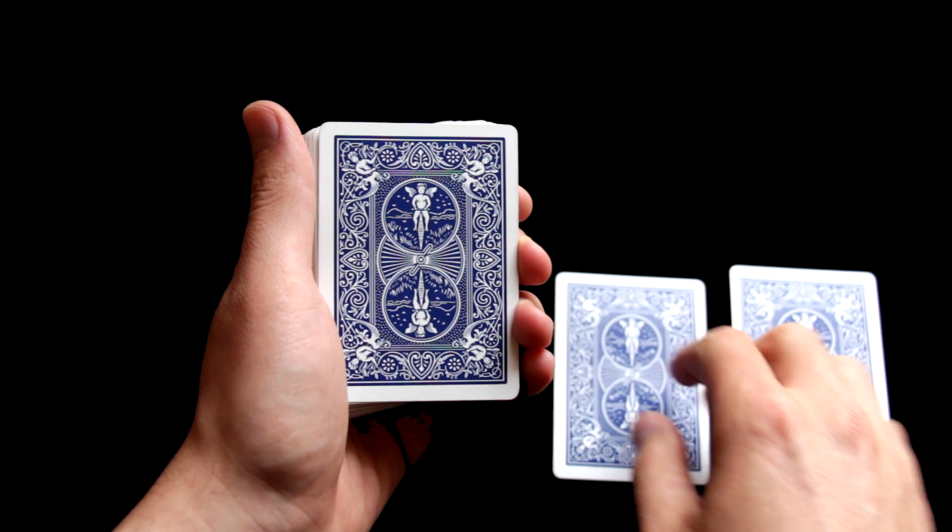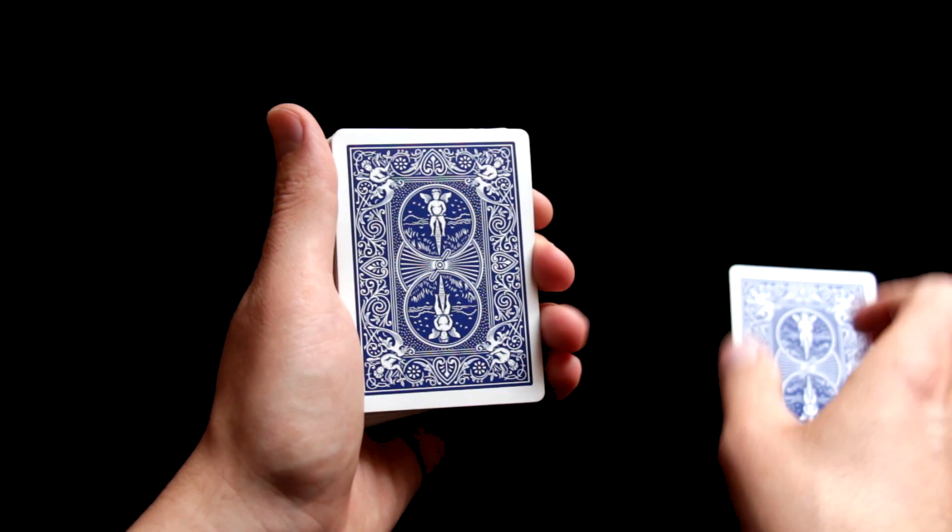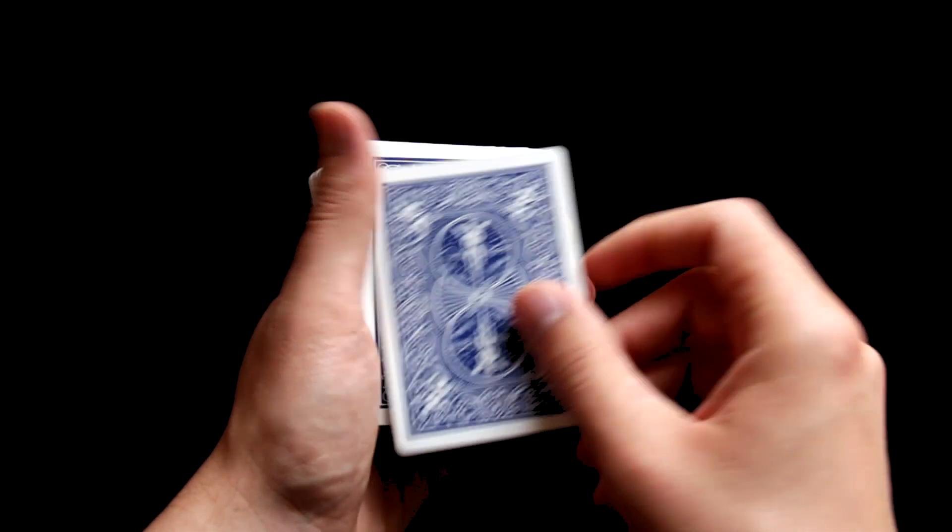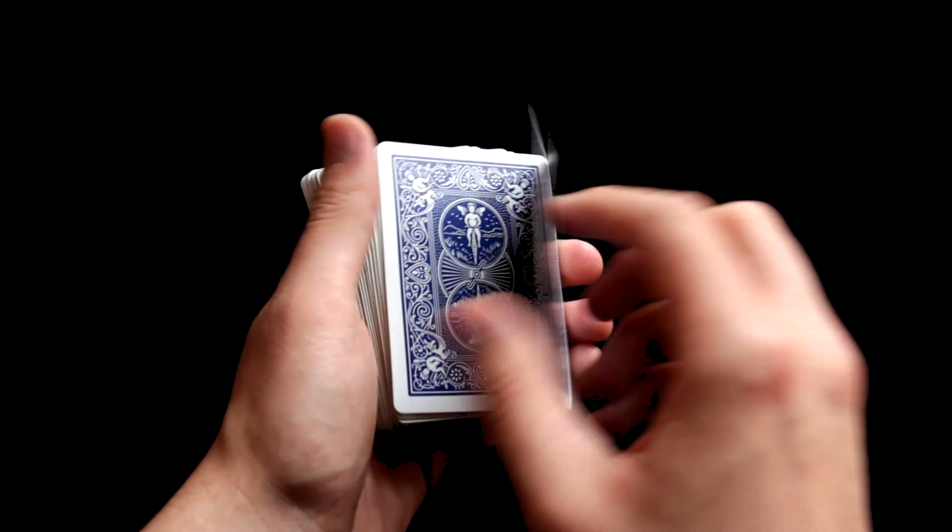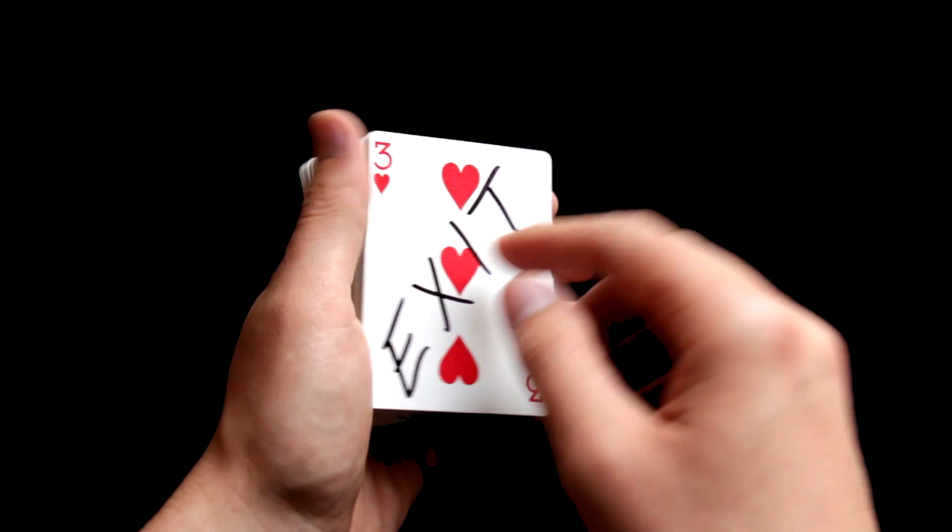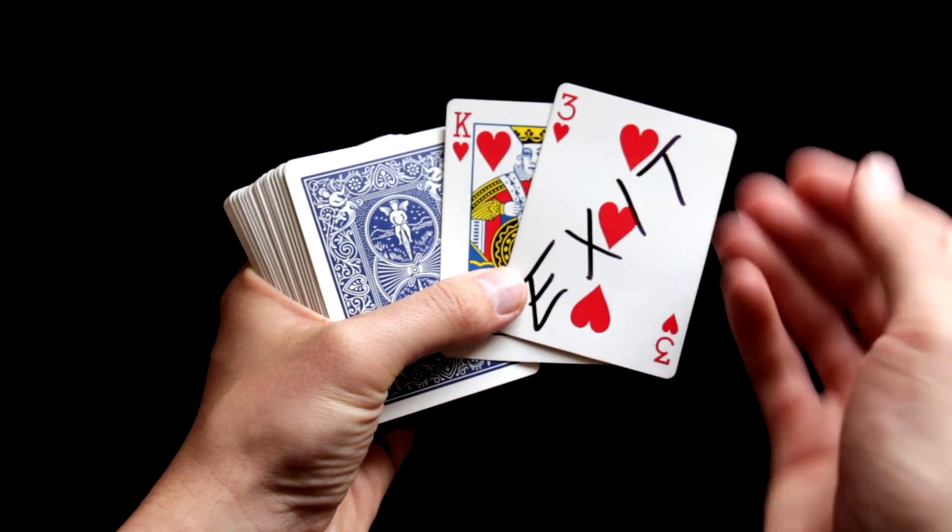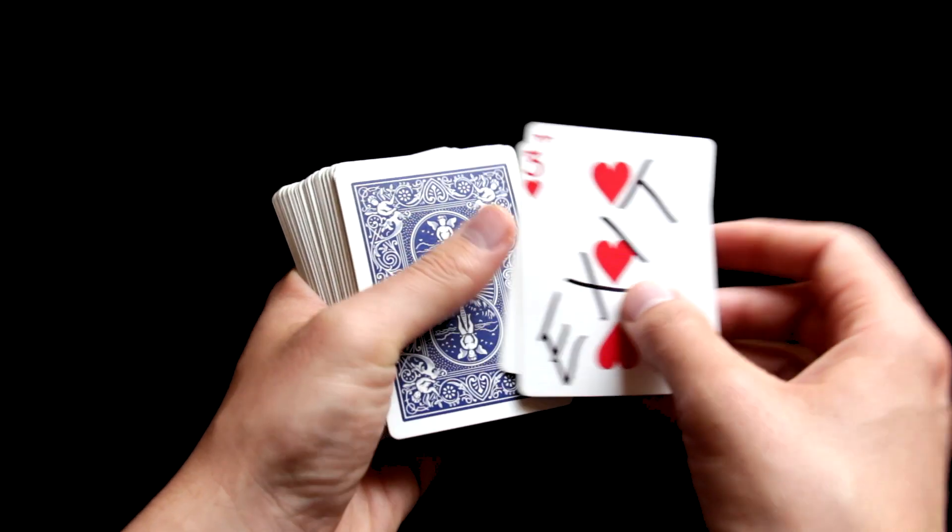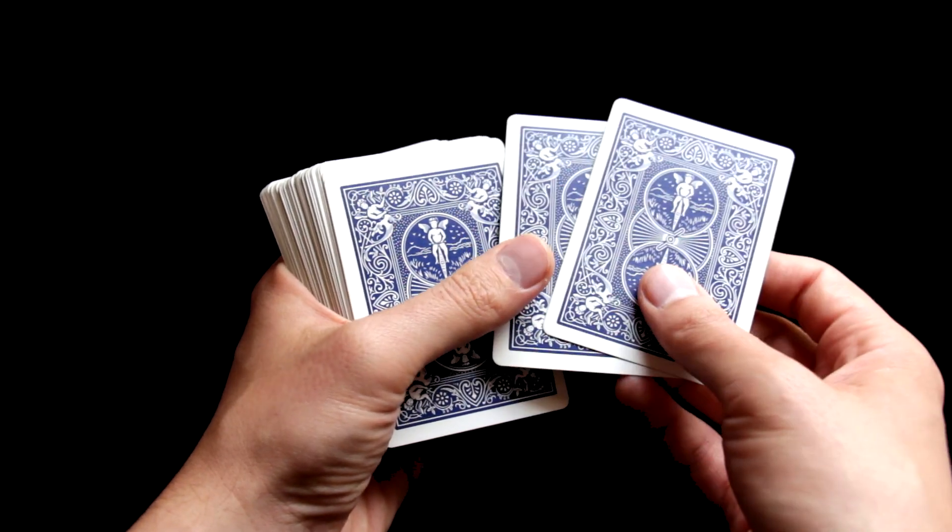Second move we need to know is the double lift. So let's imagine we have this card placed on top and one more card above it. Normally we would turn over just one card like this, it would be the king, but when we are doing a double lift we will turn over two cards as one. So you can see that we now displayed the second card. How to do it? It is really simple but it will require some practice.